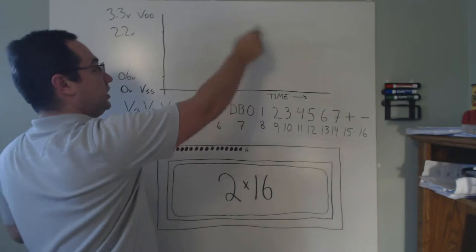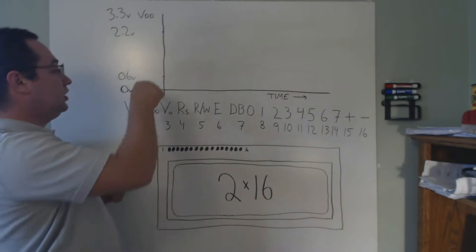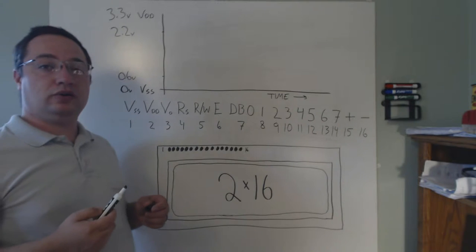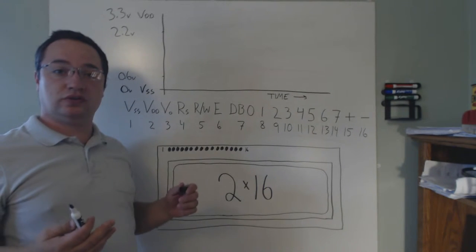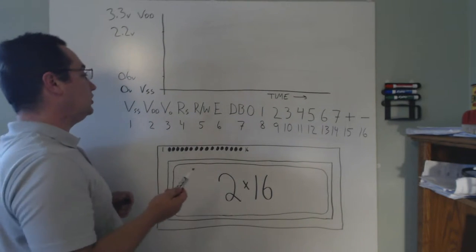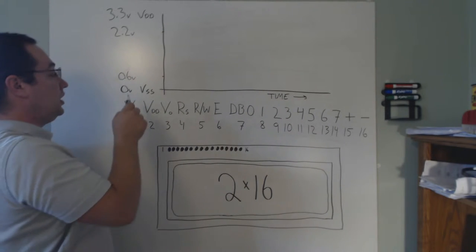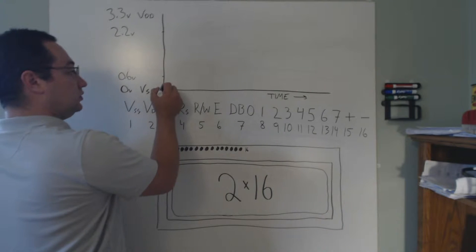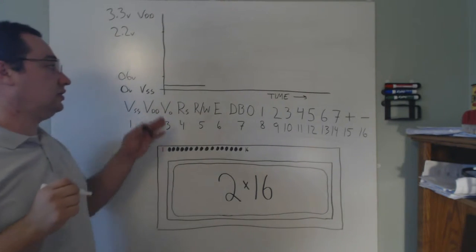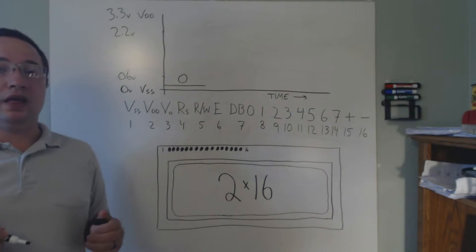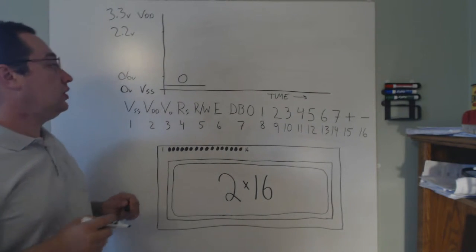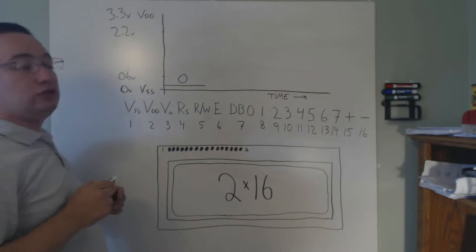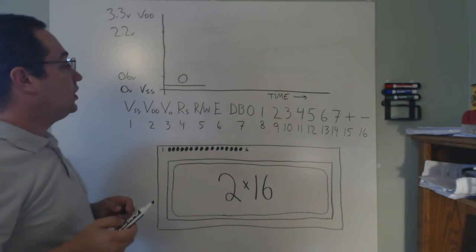Normally you'll see a graph where the Y-axis is voltage and the X-axis is time. To represent a zero digitally, the datasheet for the screen will tell you — for a 3.3 volt screen — that any voltage between 0 and 0.6 volts is good enough to represent a zero. To represent a one, any voltage above 2.2 and up to 3.3 volts represents a one.